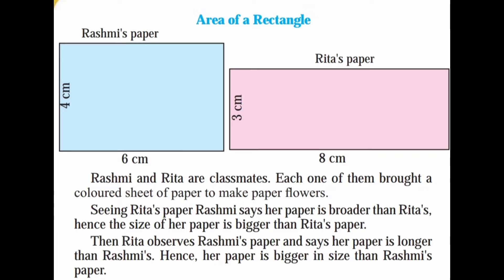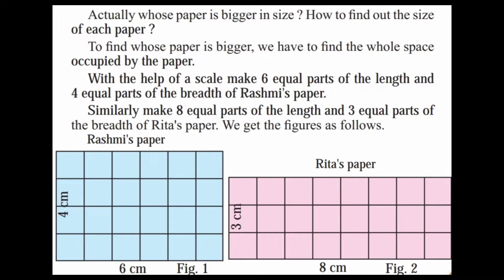Rashmi and Rita are classmates. Each one of them brought a colored sheet of paper to make paper flowers. Seeing Rita's paper, Rashmi says her paper is broader than Rita's, hence the size of her paper is bigger. Then Rita observes Rashmi's paper and says her paper is longer than Rashmi's, hence her paper is bigger in size. So actually whose paper is bigger in size?